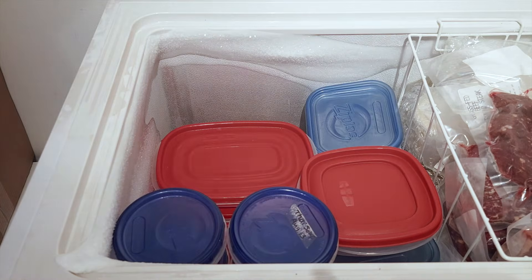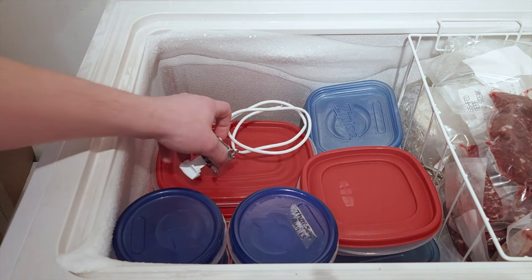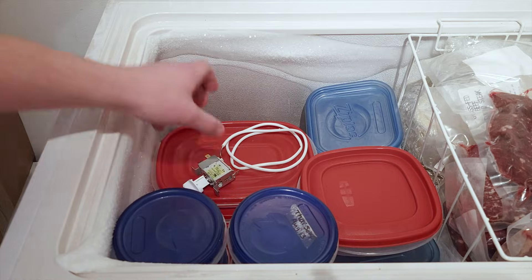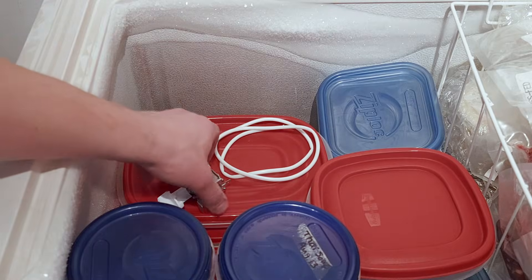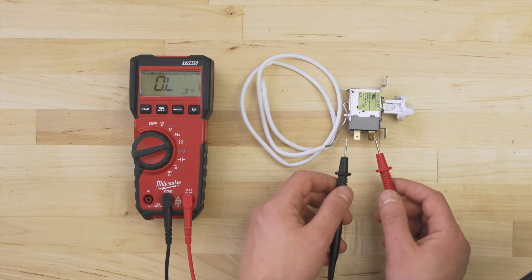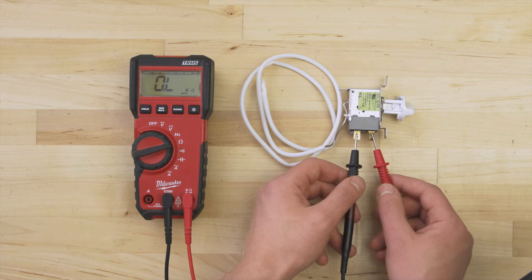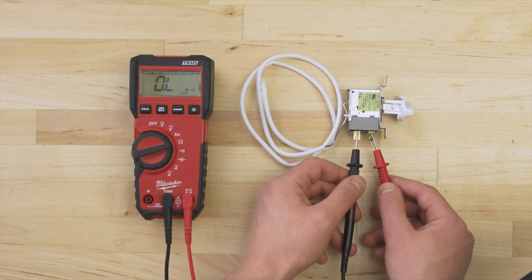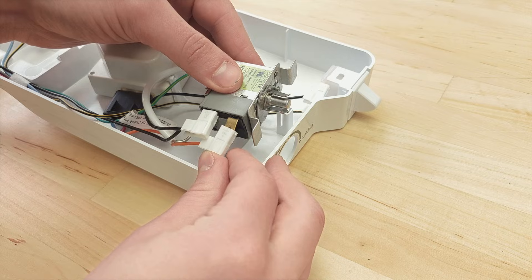You can test to see if the contacts are stuck closed. Set the thermostat to the warmest setting and place it in a working freezer. After 30 minutes, remove it and test. There should be no continuity and no reading on the multimeter.